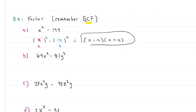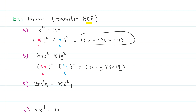Next one — b: 64x squared minus 81y squared. Can we rewrite this as something squared minus something else squared? 64 is 8 squared and x squared is just x squared, so a is 8x. And 81 is 9 squared and y squared is just y squared, so b is 9y. We've found our a and b, so we plug in: (8x minus 9y)(8x plus 9y).